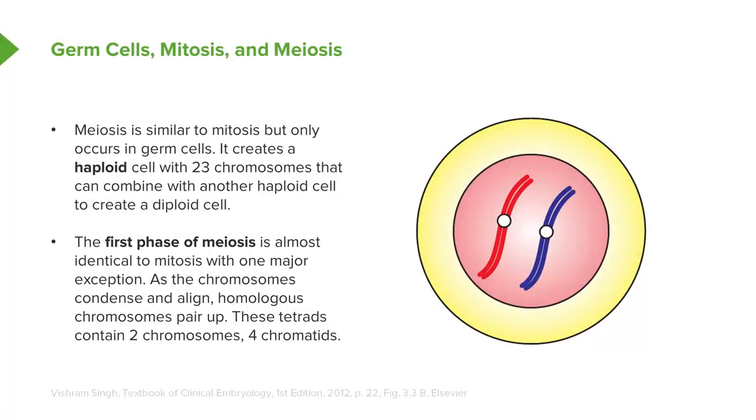Initially, meiosis is very much the same process as mitosis. The chromosomes condense, their centrosomes form and the centrioles move to opposite sides of the cell to prepare for the splitting of the cell and the nuclei.